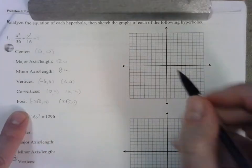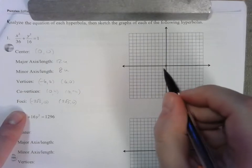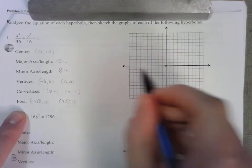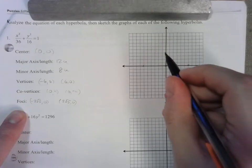Let's see what it looks like if we graph this. Center (0,0). 6 right, 6 left. 4 up, 4 down.